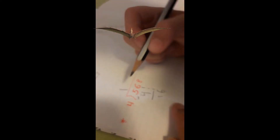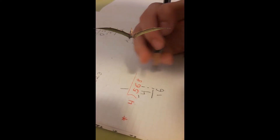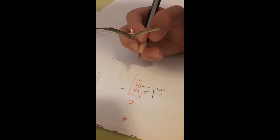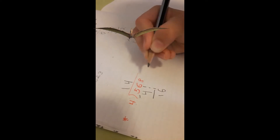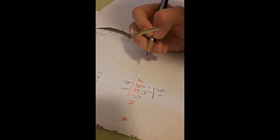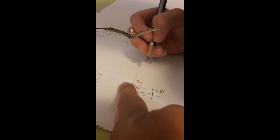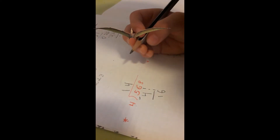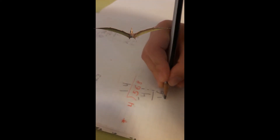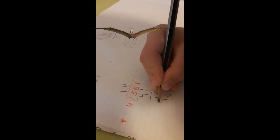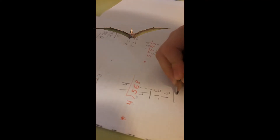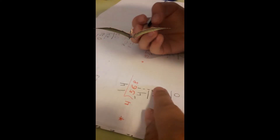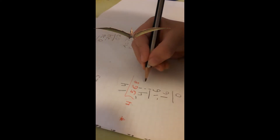How many times is 4? 16. 4. So here, 4. 4 times 4 is 16. Minus 16. Now it comes — the 8 came walking down. How many times is 4 in 8?